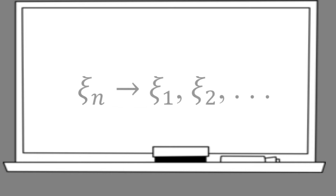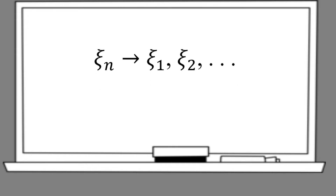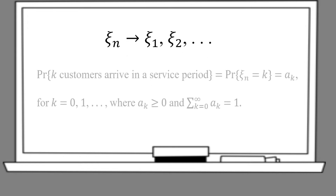Suppose that the number of new customers that arrive during the nth period is a random variable psi_n. The data in psi_n are assumed to be independent of each other, and its distribution is independent of the period, given by this.